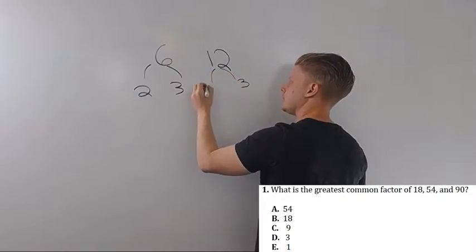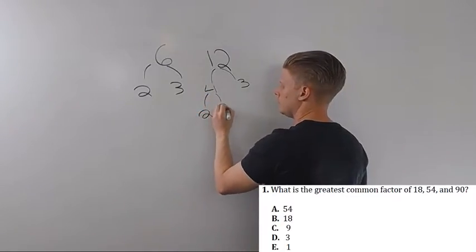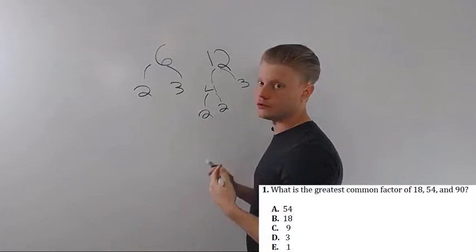12, I could say, well, that's 4 times 3. 4 is not prime. I've got to go one step farther. 2 times 2 times 3 is 12.